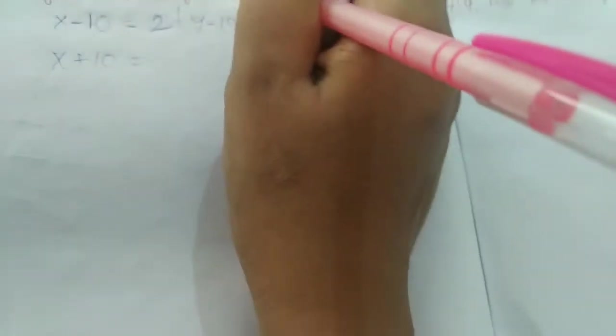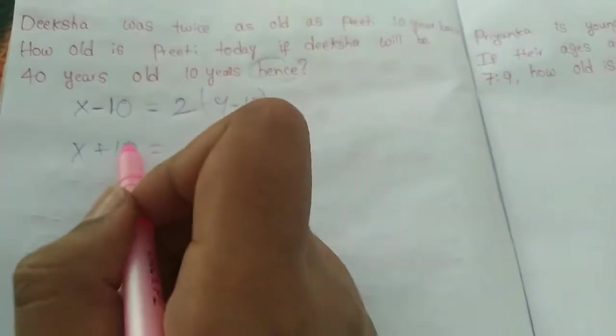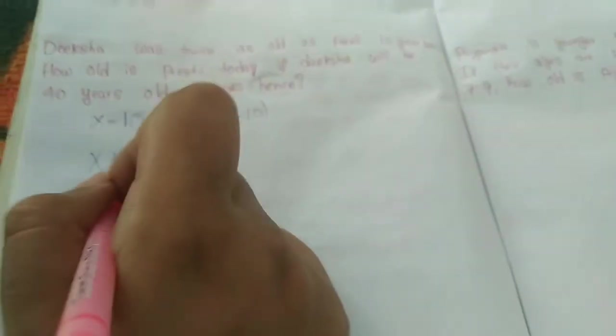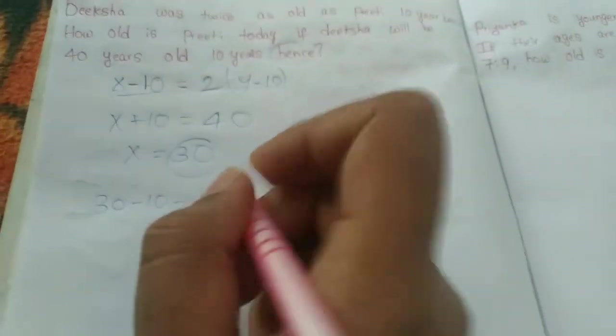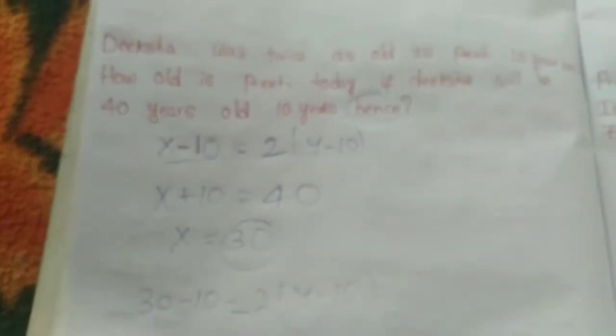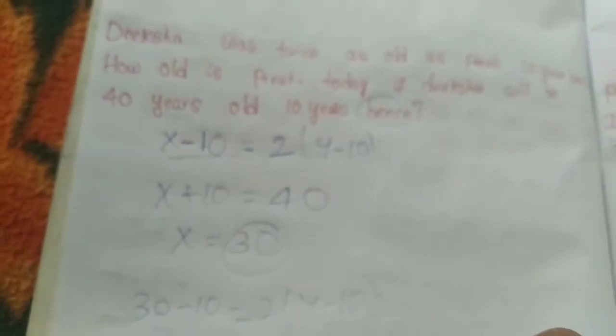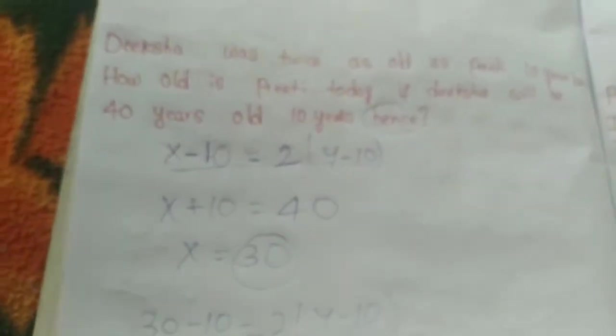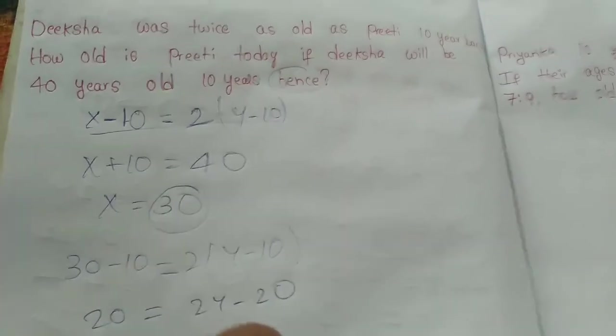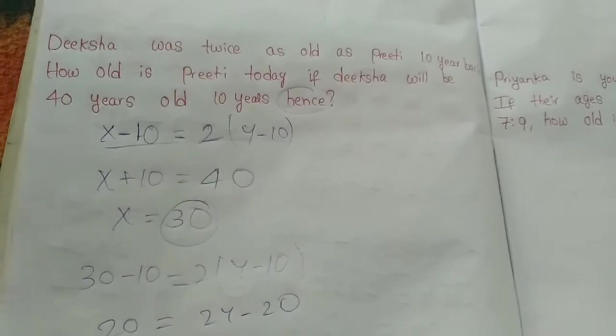Deeksha will be 40 years old 10 years hence means x plus 10 equals 40, so x equals 30. Deeksha's present age is 30. Substituting into the first equation: 30 minus 10 equals 2 times (y minus 10), so 20 equals 2y minus 20, which means y equals 20. Preeti's present age is 20 years. Got it?